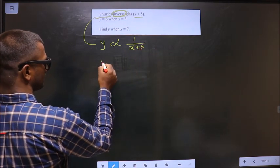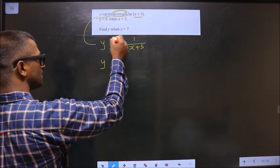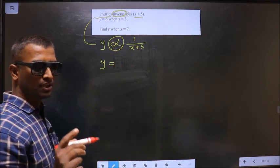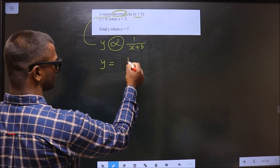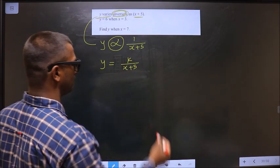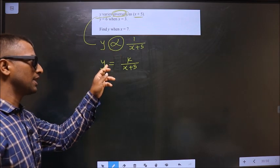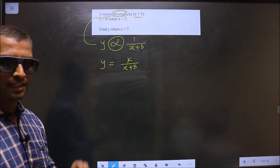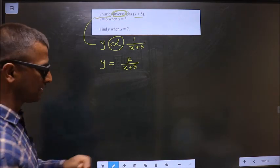Now to replace this proportionality symbol with equal to, I should put the constant k. Whenever you want to replace proportionality with equal to, you should put the constant k. It is a rule.